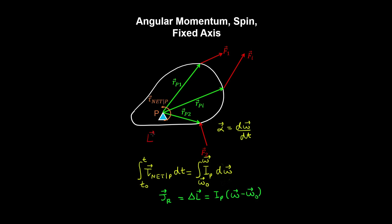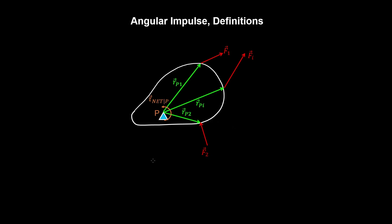The following quantity is known as the spin angular momentum, because the rigid body is spinning or rotating about a fixed axis. We can write the rotational analogue of Newton's second law for rigid body rotation about a fixed axis in the following form, where on the right-hand side we have the instantaneous rate of change of angular momentum with respect to time, equal to the net torque about a perpendicular axis passing through point P.